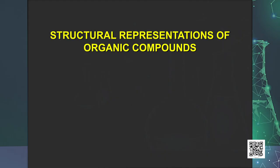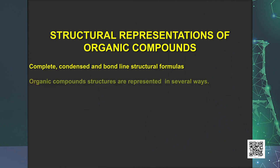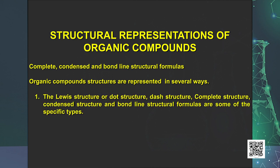The next topic we are going to discuss is the structural representations of organic compounds — that is, complete, condensed, and bond line structural formulas. Structures of organic compounds are represented in several ways, namely the Lewis structure or dot structure, dash structure, condensed structure, and bond line structural formulas. In Lewis structure, a bond between two atoms is shown by the pairing of two electrons, shown as two dots. How to draw Lewis structures was already studied in unit 4, chemical bonding and molecular structure.